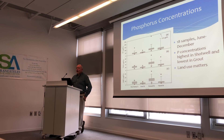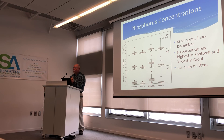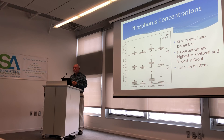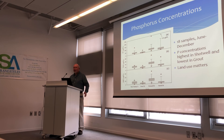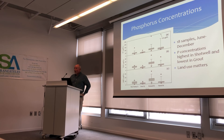I want to finish with a slide summarizing some 2018 phosphorus data. The top panel is total phosphorus, followed by total dissolved phosphorus and soluble reactive phosphorus, based on 18 samples collected from June to December 2018 — including four samples collected during major storms. We see the highest concentrations in Shotwell Brook and the lowest in Grout Brook, which corresponds well to the land use pattern. Wherever we look, we tend to see higher nutrient concentrations in watersheds that are highly developed or have a lot of agricultural land.